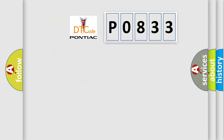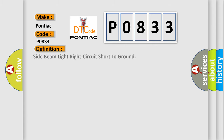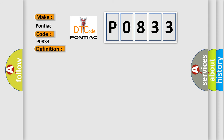The number itself does not make sense to us if we cannot assign information about what it actually expresses. So, what does the Diagnostic Trouble Code P0833 interpret specifically for Pontiac car manufacturers? The basic definition is: side beam light right circuit short to ground. And now here is a short description of this DTC code.